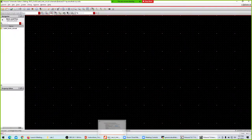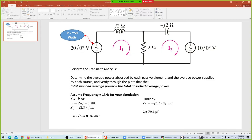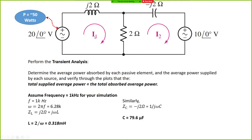The circuit we are looking at has a resistor and J2 ohm inductance, an inductive reactance of J2 ohm and capacitive reactance of minus J2 ohm. We have two voltage sources with phase angles of zero and amplitudes of 20 and 10. We have to perform the transient analysis, so let's build that circuit first.